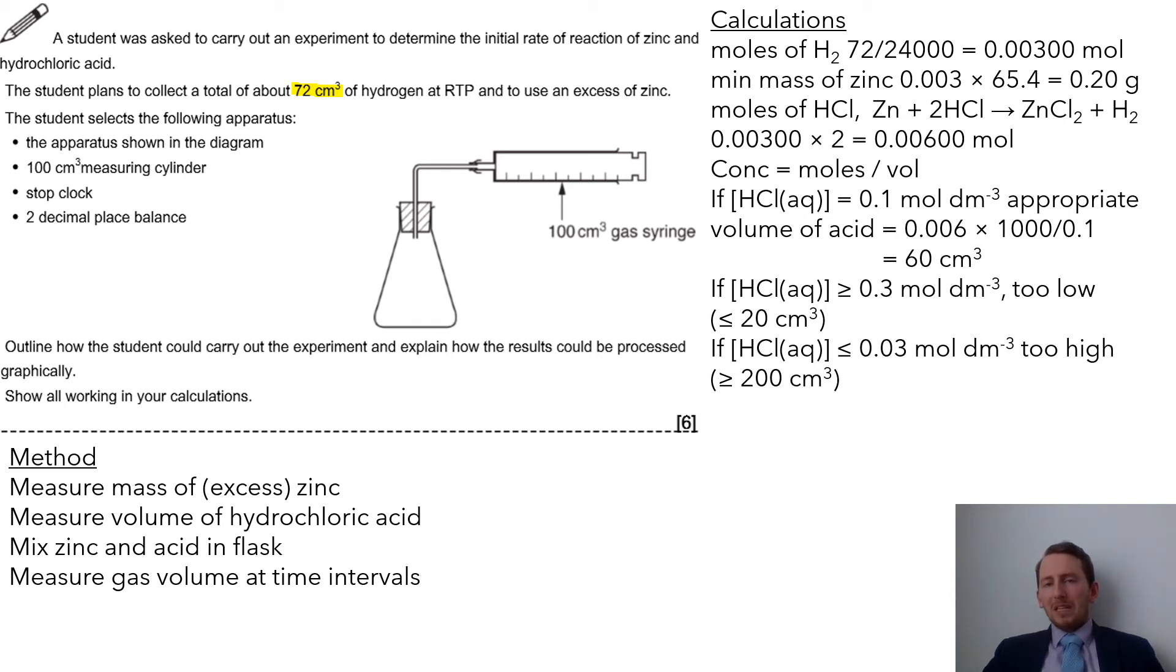Those are some quite complicated calculations. The method I think people would be fine with - working out the moles of hydrogen and the minimum amount of zinc and you can work out your ratio for your HCl. After that, this assumption of saying okay well if the concentration is this, the volume is this, and then well this would be too low and too high, that last bit of the calculation would be quite tricky. That's why I've included this question is to show you how you can answer that if you get asked anything like that in the future.